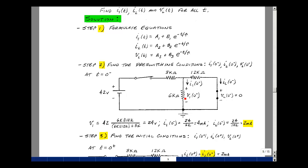The 6k and 12k in parallel, voltage dividing with the 3k. So we take 6k in parallel with 12k over the same thing plus 3k times the 42 volts, get 24 volts. So there's 24 volts across the 6k and the 12k.